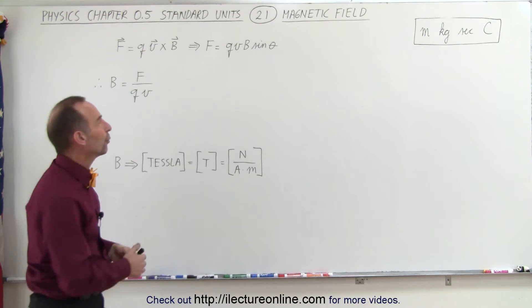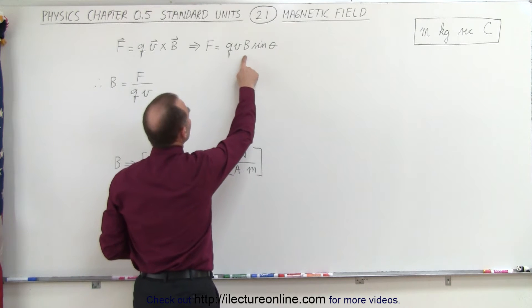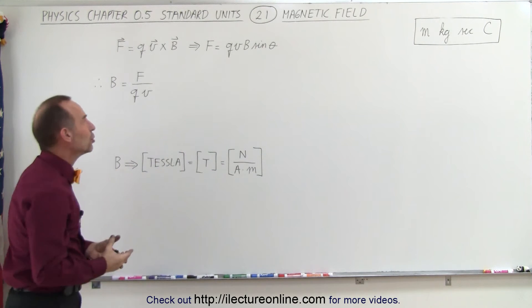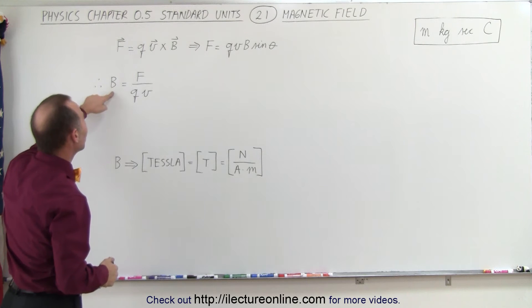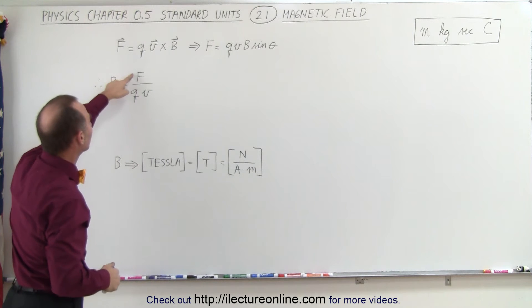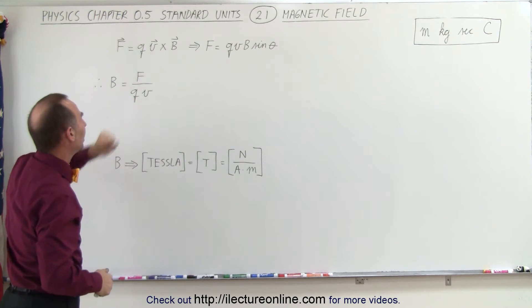The magnitude of the force can be expressed as QVB times the sine of theta. The sine of theta will not have any units. Assuming that it's perpendicular, so the sine of theta is 1, the B field is equal to the force divided by Q divided by V.